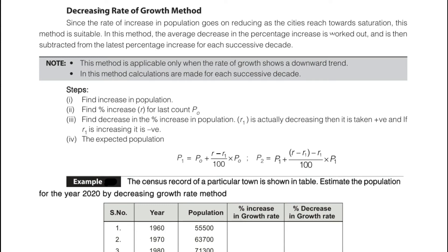Hello friends, welcome to Civil Engineering Exam. Today we're going to see the topic related to water resource engineering. The topic is the decreasing rate of growth method. We have to find out the population growth for designing sewers, water supply, etc. For example, in 2030 or 2040, what is the population of a particular city — that is what we have to find out, and one method for this is the decreasing rate of growth method.